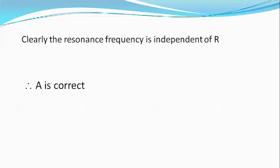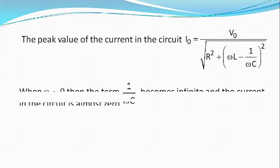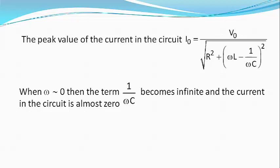The peak value of the current in the circuit is given by I0 equals V0 divided by square root of R square plus bracket L omega minus 1 by omega C whole square. But as omega approaches zero, the term 1 by omega C approaches infinity. Therefore, the current in the circuit becomes almost zero and hence option B is also correct.